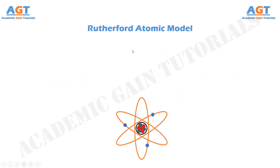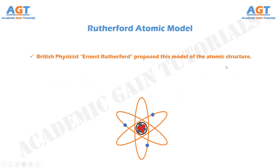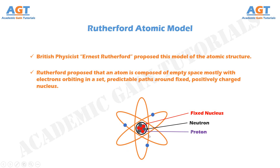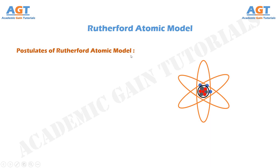British physicist Ernest Rutherford proposed this model of atomic structure. Rutherford proposed that an atom is composed of mostly empty space, with electrons orbiting in set, predictable paths around a fixed, positively charged nucleus. According to this model, an atom consists of a fixed nucleus containing neutrons and protons, and electrons revolving in fixed orbits.